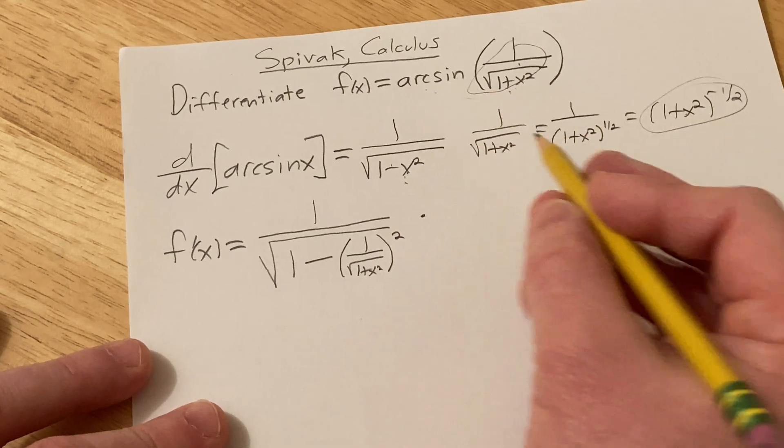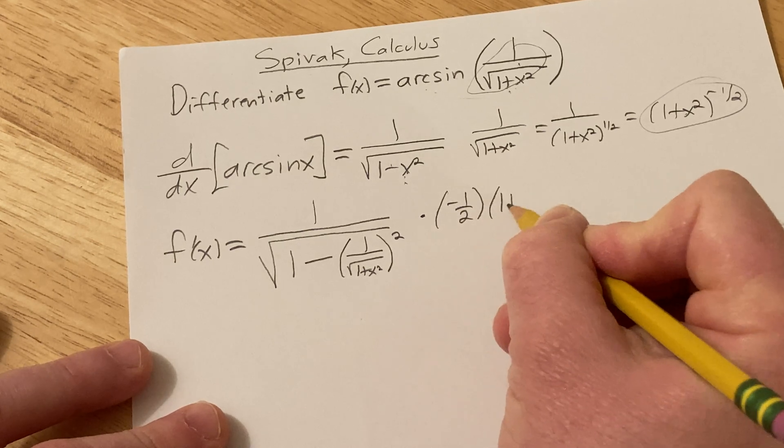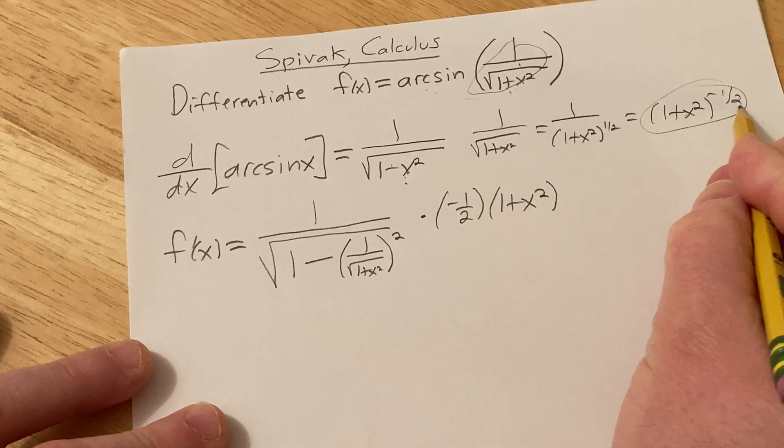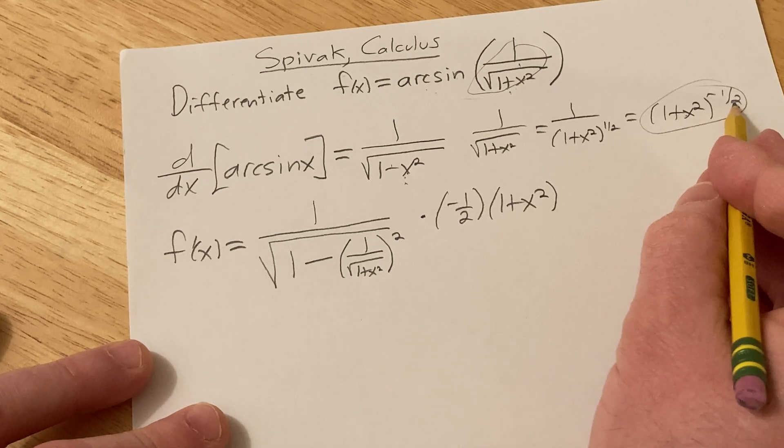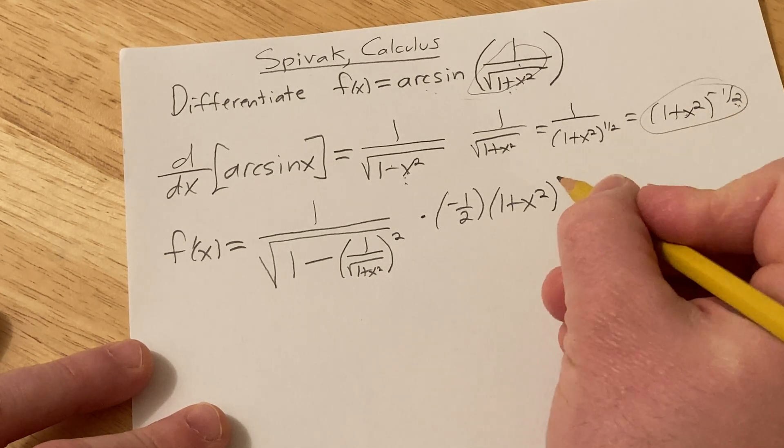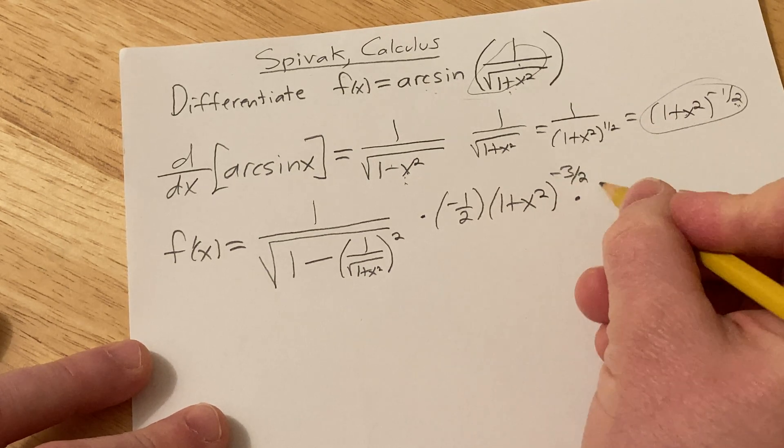So now I'm going to use this one because it's easier to differentiate. So you put the negative 1 half in the front, you leave the inside untouched, subtract 1, negative 1 half minus 1 is really negative 1 half minus 2 halves, which is negative 3 halves, times the derivative of the inside, which is 2x.